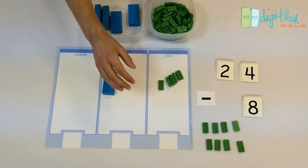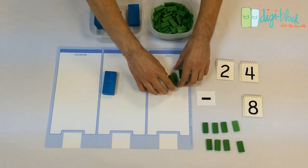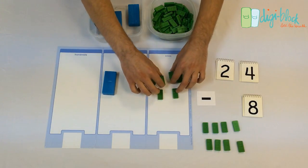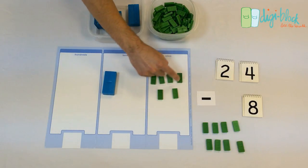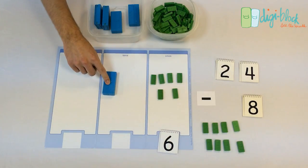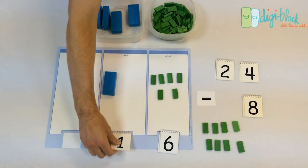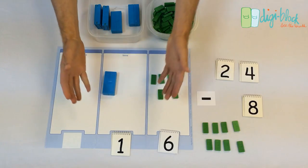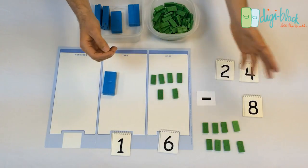Now that they've taken away 8, all they need to do is count what they have left. 1, 2, 3, 4, 5, 6. 6 ones. Set the digit. 1, 10. Set the digit. Now, you can ask, in summary, what is 24 minus 8? And they'll tell you 16.